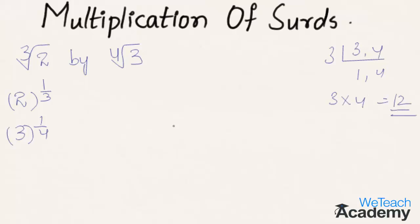To write them in the same order, multiply the numerator and denominator by 4 for the first term, and by 3 for the next surd. We get 2 raised to the power 4/12, and 3 raised to the power 3/12.